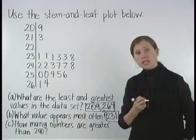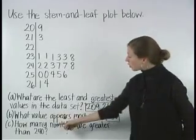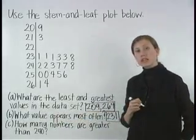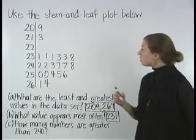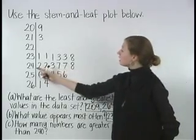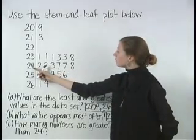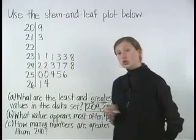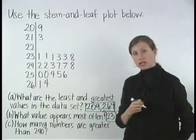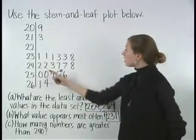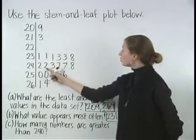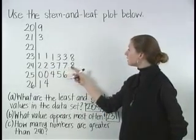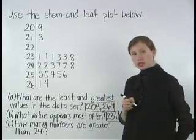To find how many numbers are greater than 240, notice that any number with a stem of 24 or greater will be greater than 240. There are 1, 2, 3, 4, 5, 6 leaves on stem 24.